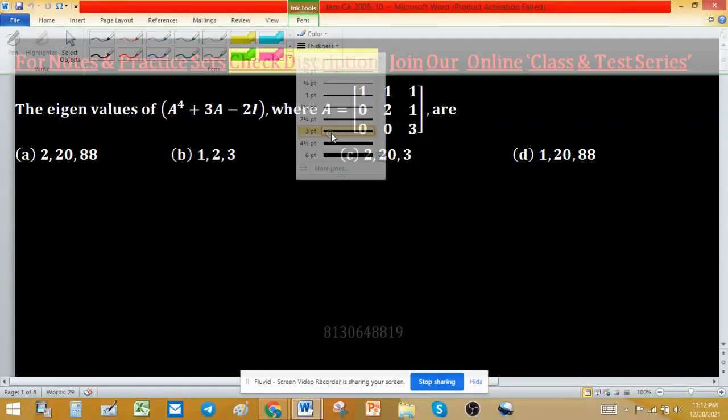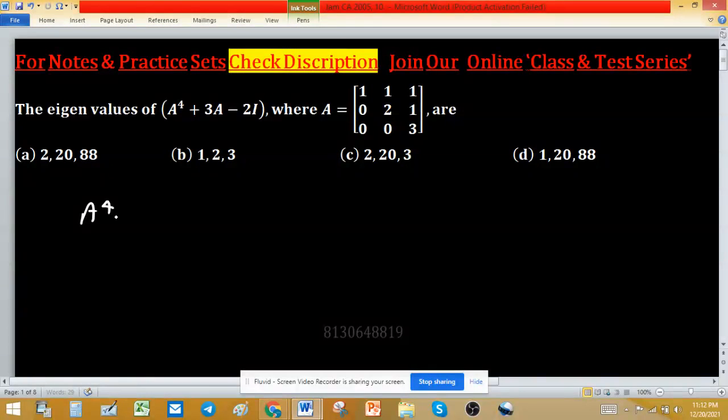Given to you and we have to find eigenvalues of A raise to the power 4 plus 3A minus 2 times identity matrix. To find eigenvalues of this, first recall one concept.